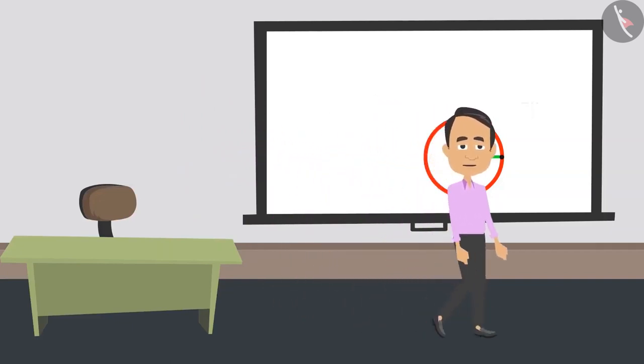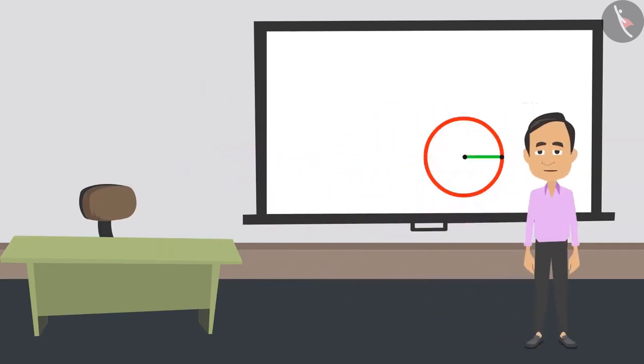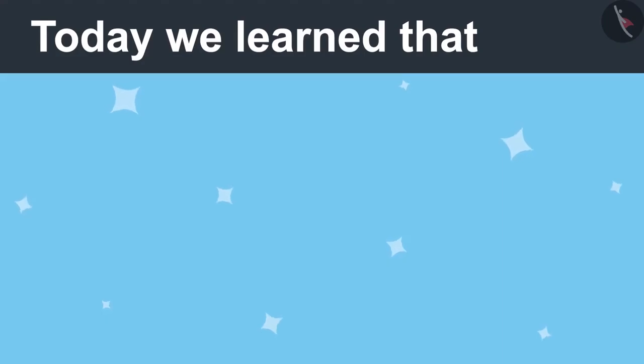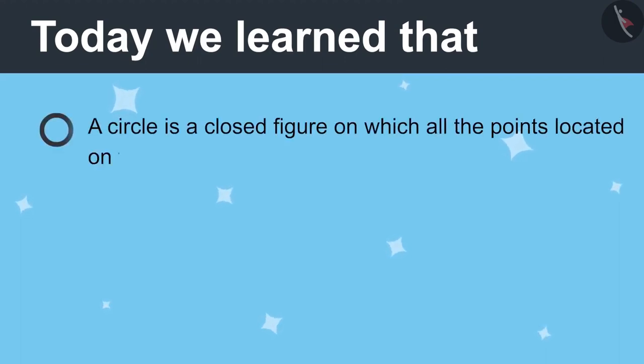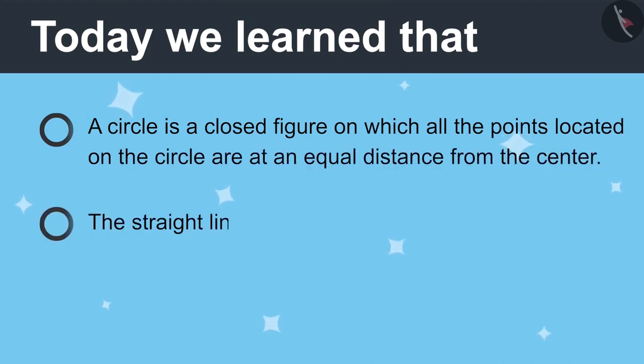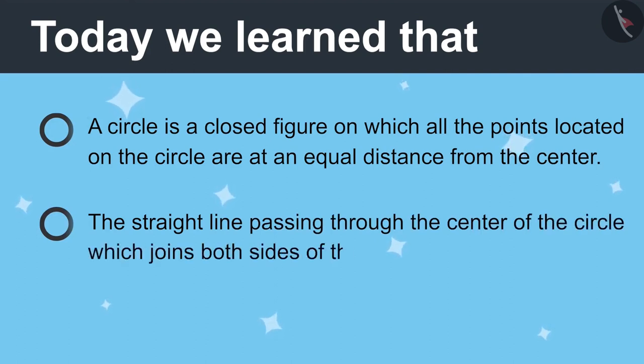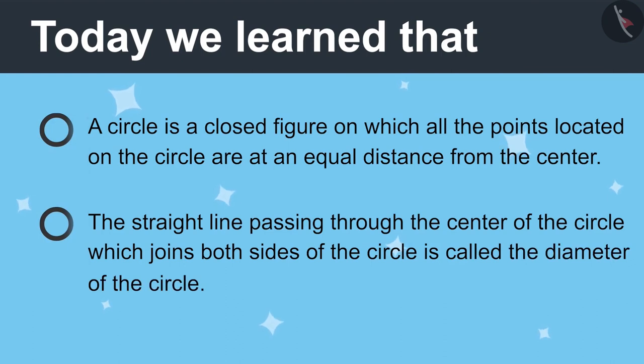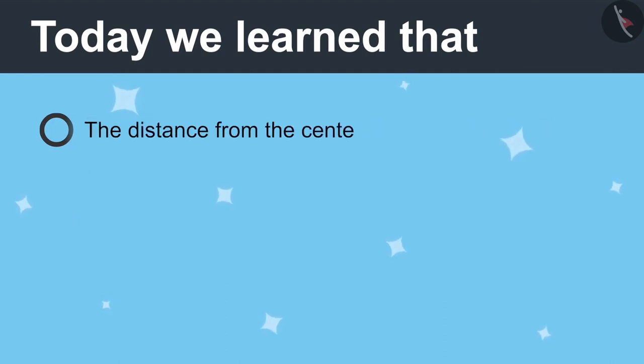Absolutely right. Now you have understood how to measure a circle. So, now you can measure the wheels you were asking about. Today we learned, a circle is a closed figure, in which all the points are at the same distance from the centre. The straight line passing through the centre of the circle, which meets both sides of the circle, is called the diameter of the circle. The distance from the centre of the circle to the boundary is called radius.